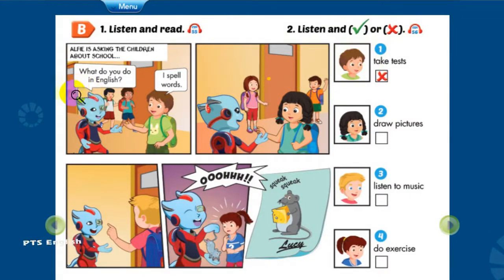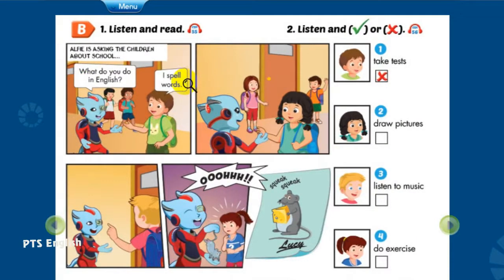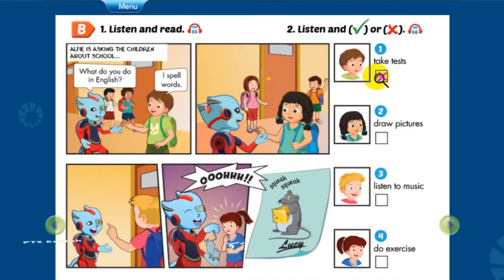1. Hi, Alfie. It's time for English. What do you do in English? I spell words. Can you see the cross? This is an example. Now listen and put a tick or a cross in the box.